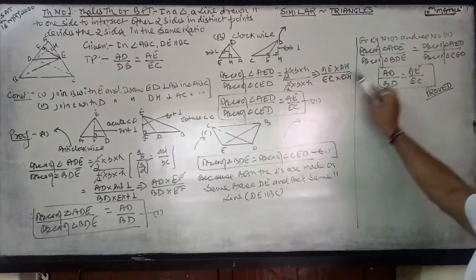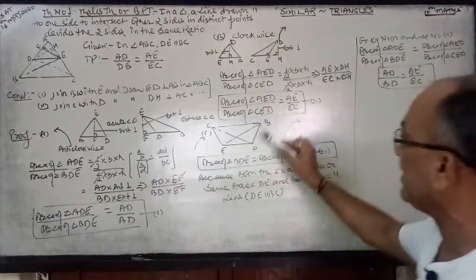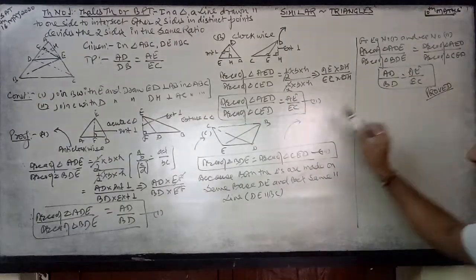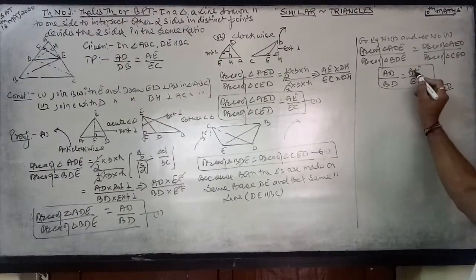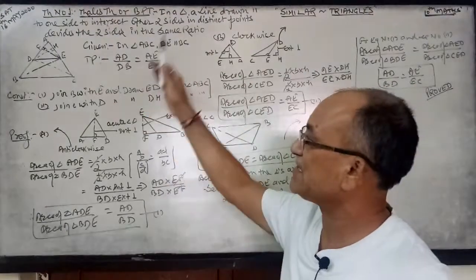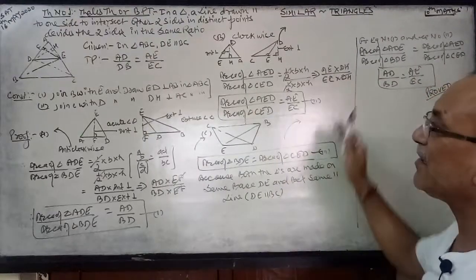So from equation number one and equation number two, area of triangle ADE over area of triangle BDE is written as area of triangle ADE over area of triangle CED. You keep the value AD over BD and now this is AE over EC. This is proved. Just bifurcating all the parts different for proving this theorem.